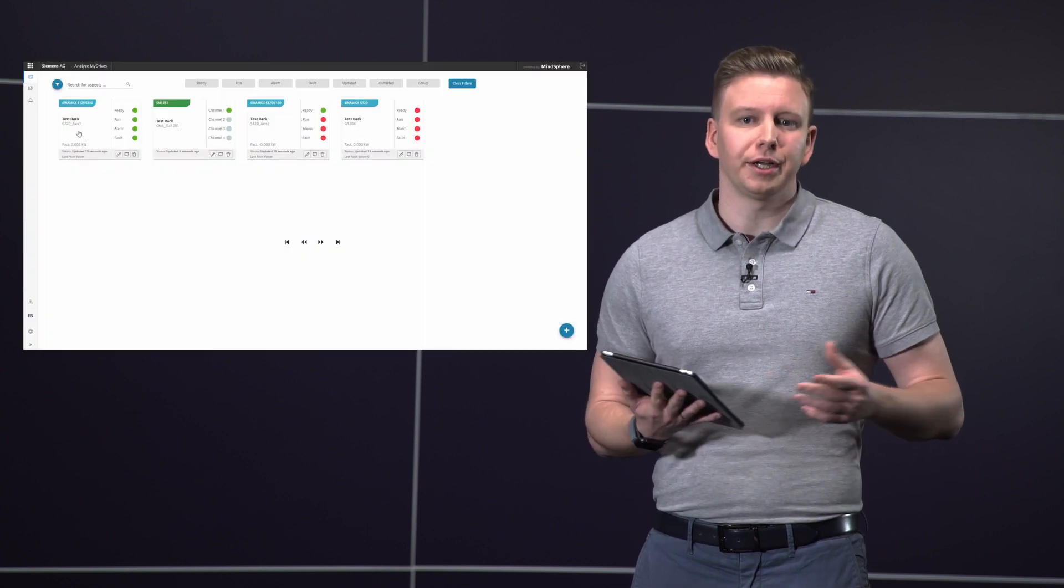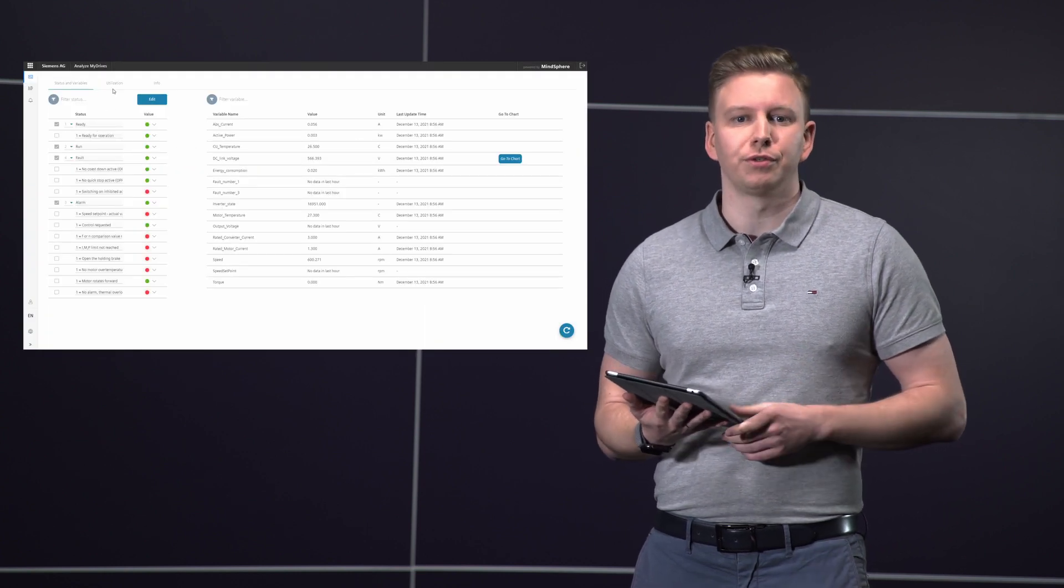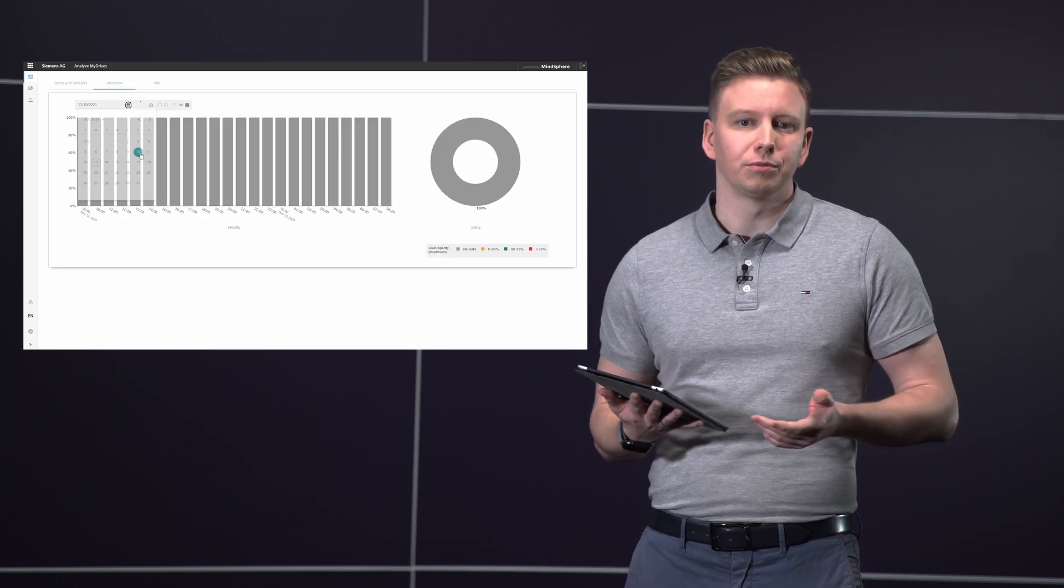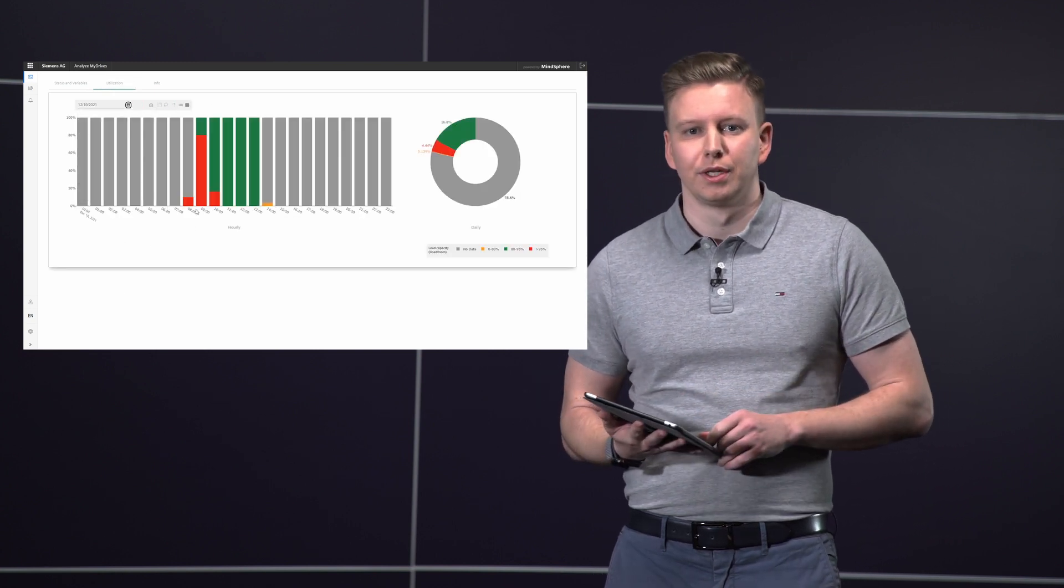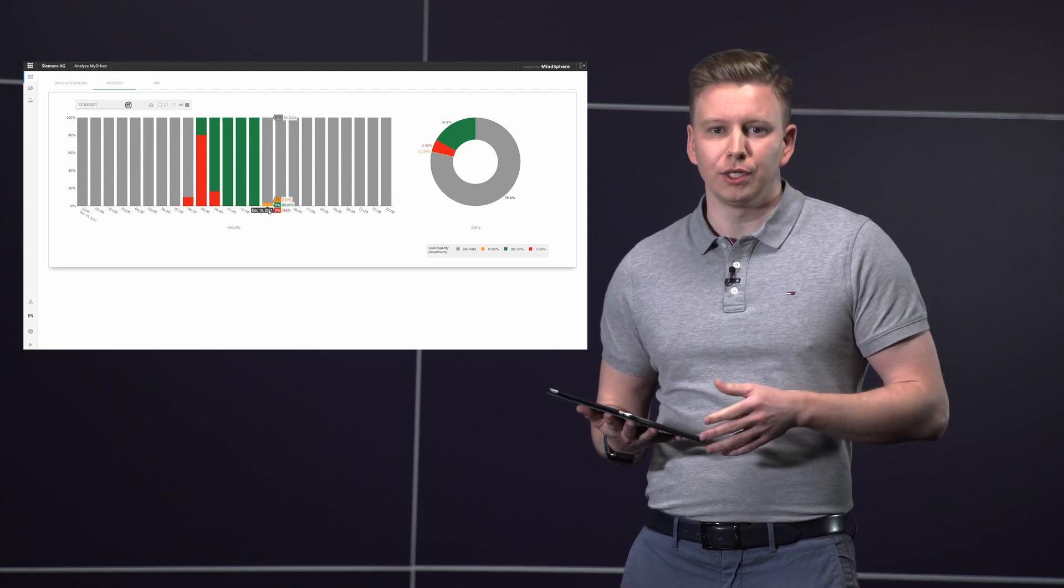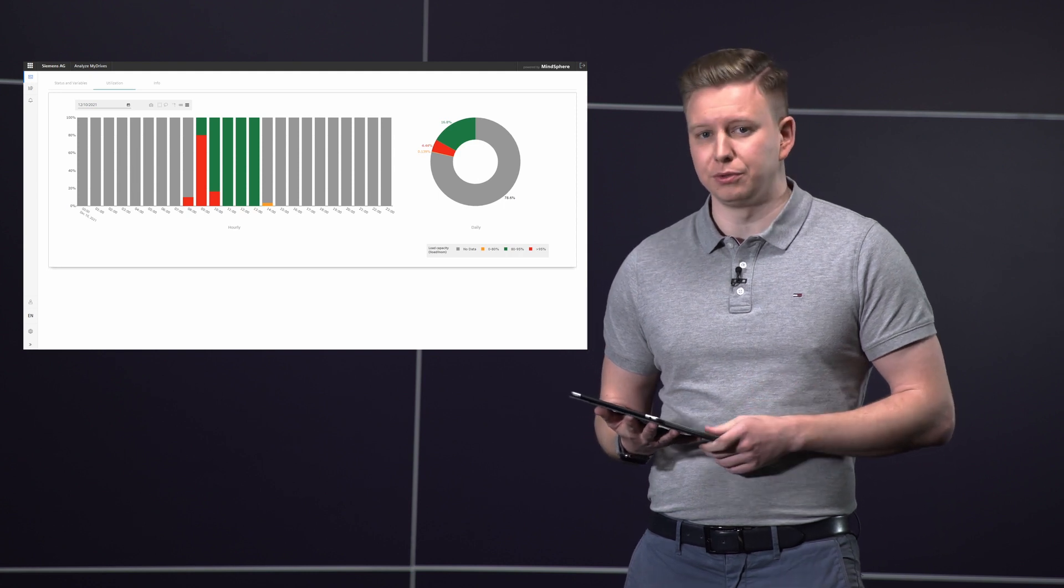And how can I check that the measures I've taken have been successful? That's easy. My drives are connected to MindSphere. Here on my iPad, I have access to the drive data through Analyze My Drives Cloud. Using dashboards, I can group drives and get a quick overview of the drive status. Using the utilization chart, I can monitor the workload of the machine. I can also find out whether the drive system is dimensioned correctly or whether a smaller drive or motor could be used.